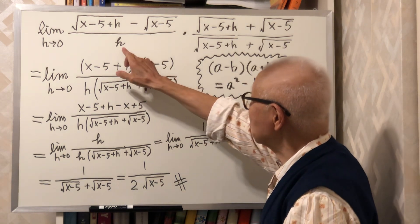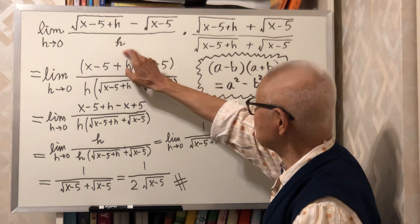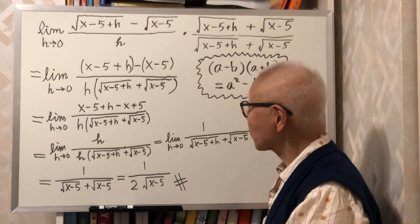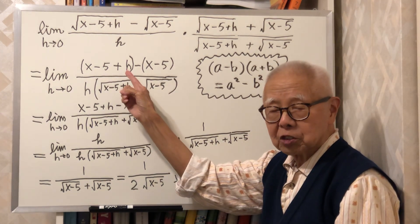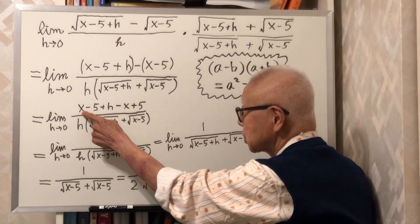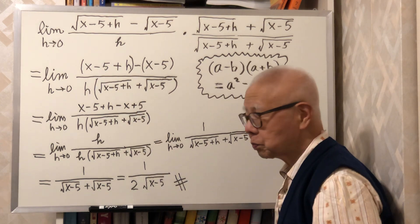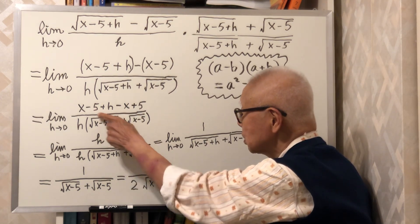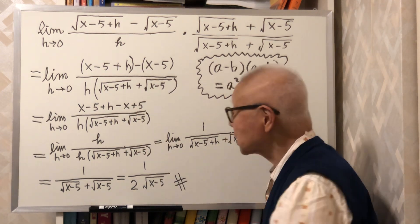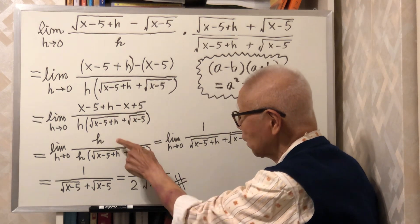And the denominator is h times this. We move the brackets. x minus x is gone. Minus 5 plus 5, that's gone. I only have h here.